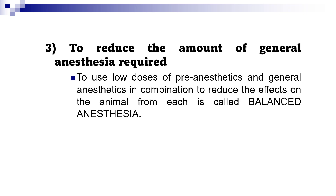It is also important to reduce the amount of general anesthetics required. When we use low doses of pre-anesthetics and general anesthetics in combination, we reduce the effects on the animal from each drug. This is what we call balanced anesthesia. In veterinary medicine, this refers to the use of a mixture of drugs such that we gain the advantages of small amounts of each drug without having to contend with the disadvantages of large doses of any one drug. The patient receives a combination of sedatives and anesthetic agents based on body weight and best suited to individual needs.